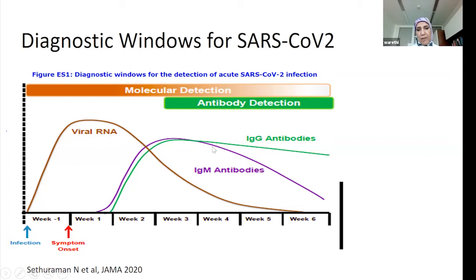Antibodies classically will start developing around week two, and by week three you can detect them in essentially all patients who got infected.